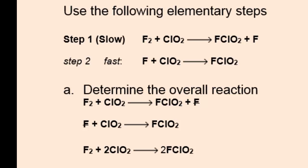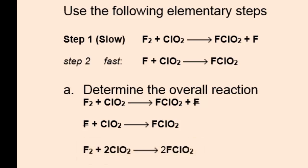The fluorine atom cancels, so the overall reaction is elemental fluorine, F2, plus two ClO2s yields two FClO2s.